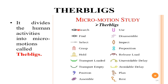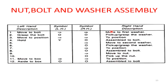Therbligs divide human activities into 18 basic micro-motions. For example, if you want to take a tool from a toolbox, the motions include: search, find, select, grasp, hold, transport loaded, transport empty, position, assemble, use, disassemble, inspect, pre-position, release, reload, unavoidable delay, avoidable delay, and plan. These are the 18 micro-motions classified as therbligs.